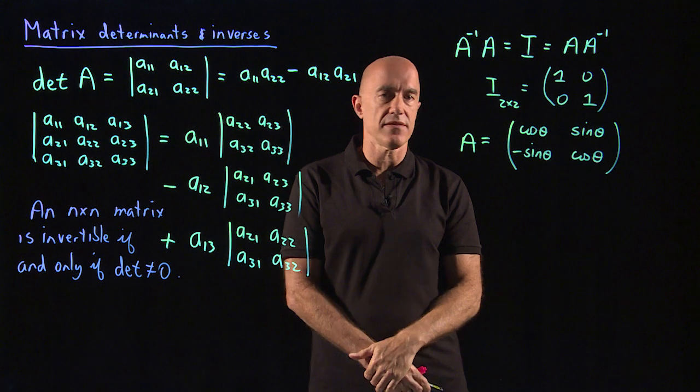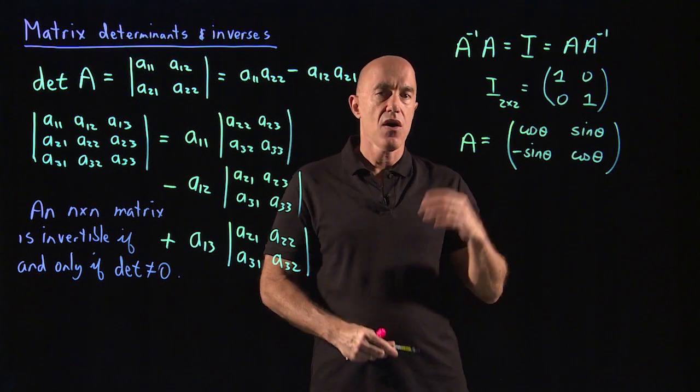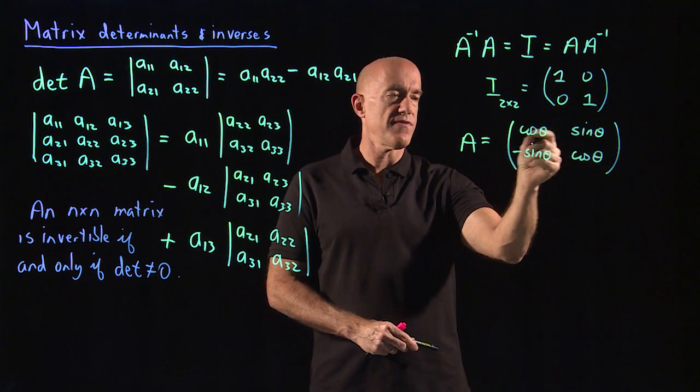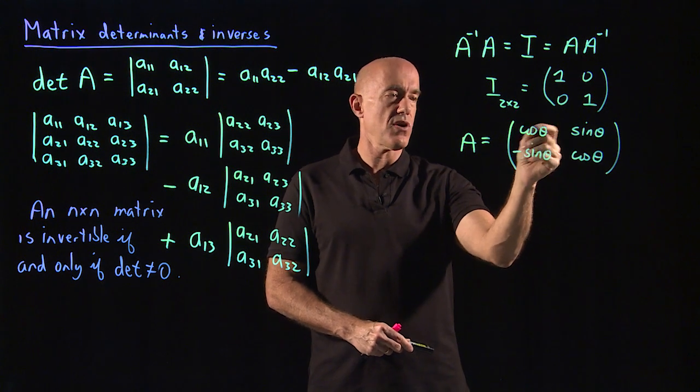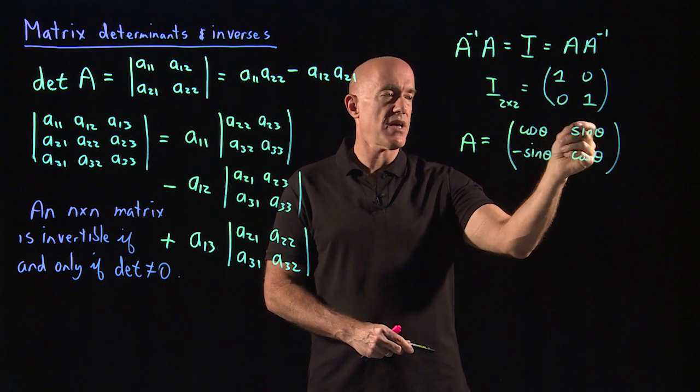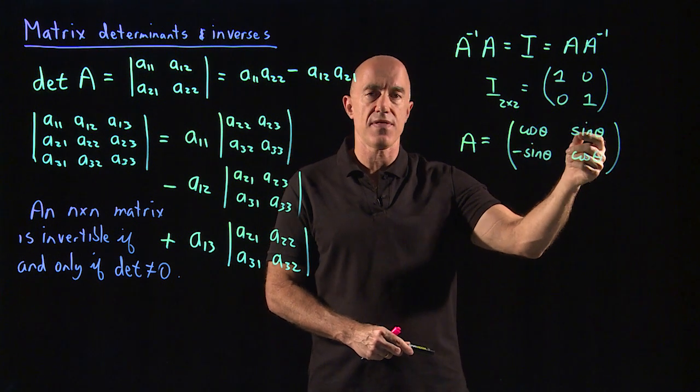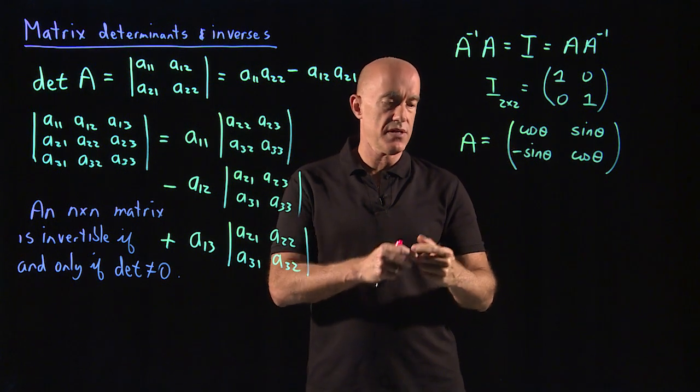That's the definition of an orthogonal matrix. Also, one more point is that the length of the vector defined by each row is one. So the length of cosine theta i plus sine theta j is cosine squared theta plus sine squared theta is one. So that defines what's called an orthogonal matrix.